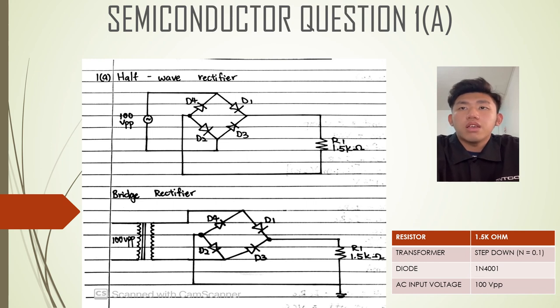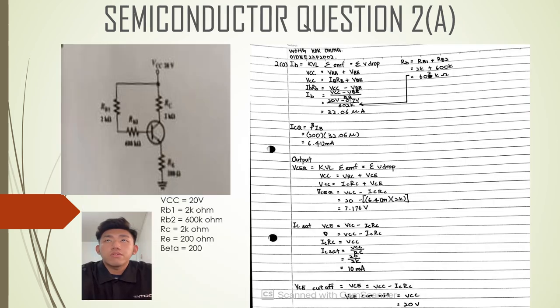The next question I choose is 2A. VCC is 20V, RB1 is 2K ohm, RB2 is 600K ohm, RC is 2K ohm, RE is 200 ohm, and beta is 200.